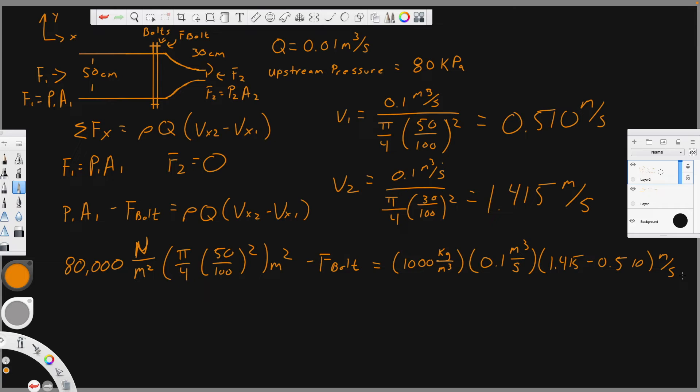And if we do the math on that, we have 15,680 newtons minus the force in our bolts, equal to 90.5 kilogram meters per second squared, which is also a newton. So we have newtons and newtons. So our force in our bolt, or all our bolts, is equal to 15,589.5 newtons.